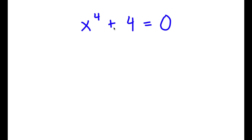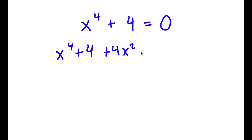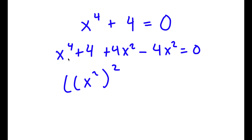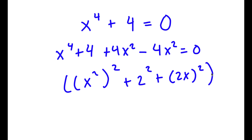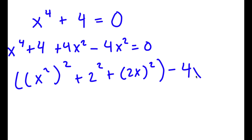In this problem, I have x to the power of 4 plus 4 is equal to 0. To solve this, I'm going to start by adding as well as subtracting 4x squared on the left-hand side. So now I have x to the power of 4 plus 4 plus 4x squared minus 4x squared equals 0. Since we're adding and subtracting the same value, this makes no illegal changes. I'm going to rewrite x to the power of 4 as x squared to the power of 2, 4 as 2 squared, and 4x squared as 2x to the power of 2, then subtract 4x squared.